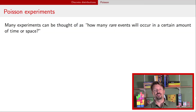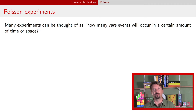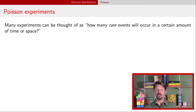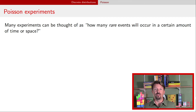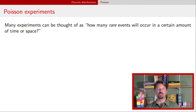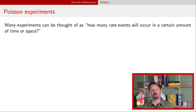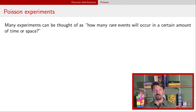Hi, I'm Dr. J and this is a video about Poisson random variables. This is the fifth video in a five-part video series about discrete random variables, including the most recent videos on Bernoulli and binomial random variables. Poisson random variables round out the most predominantly used distributions to model real-world data in the discrete random variable framework. The next video after this will be talking about continuous random variables.